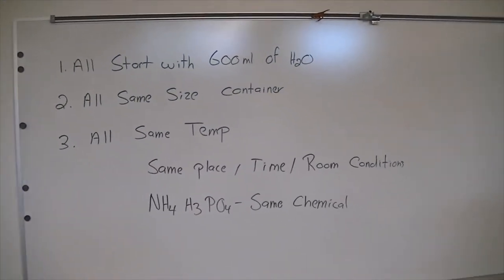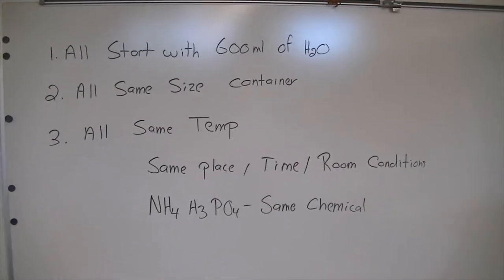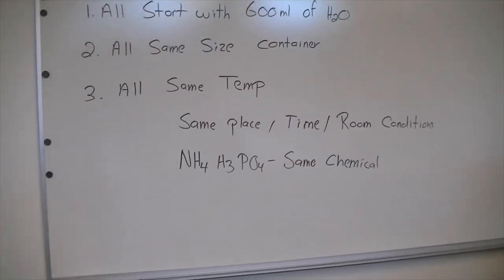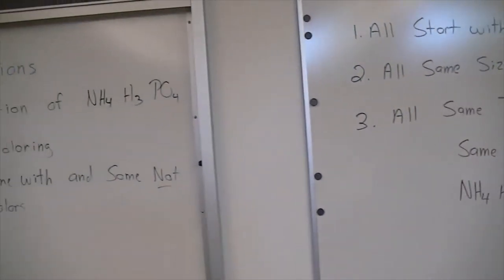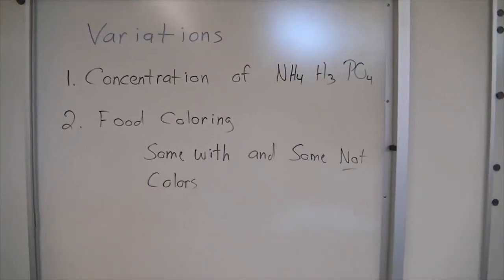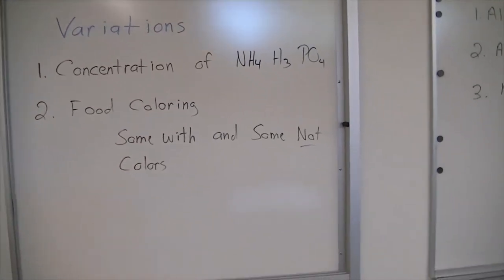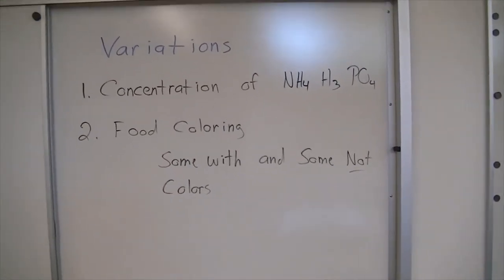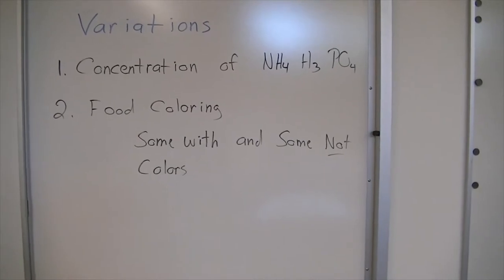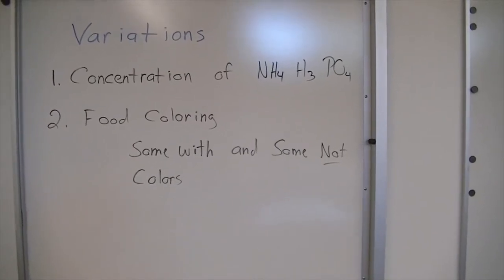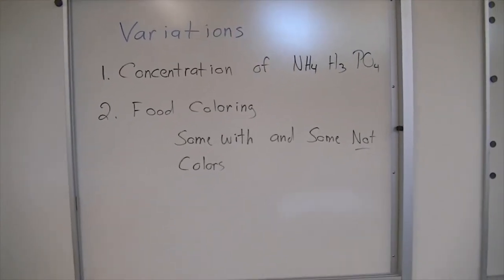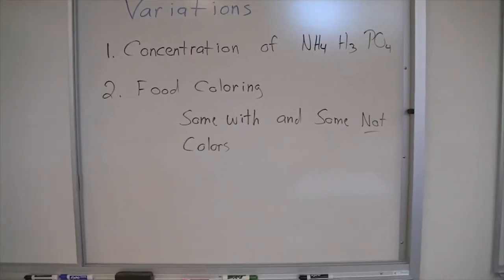They're all basically started in the same place, same time, same room conditions, same ambient air quality, and the same chemical: ammonium phosphate, (NH4)H3PO4. So everything's the same. But there is a little bit of variation, and this is where we start writing our hypothesis. The variation is simply that the amount of ammonium phosphate is going to vary, and food coloring — some are going to have food coloring and others are not.